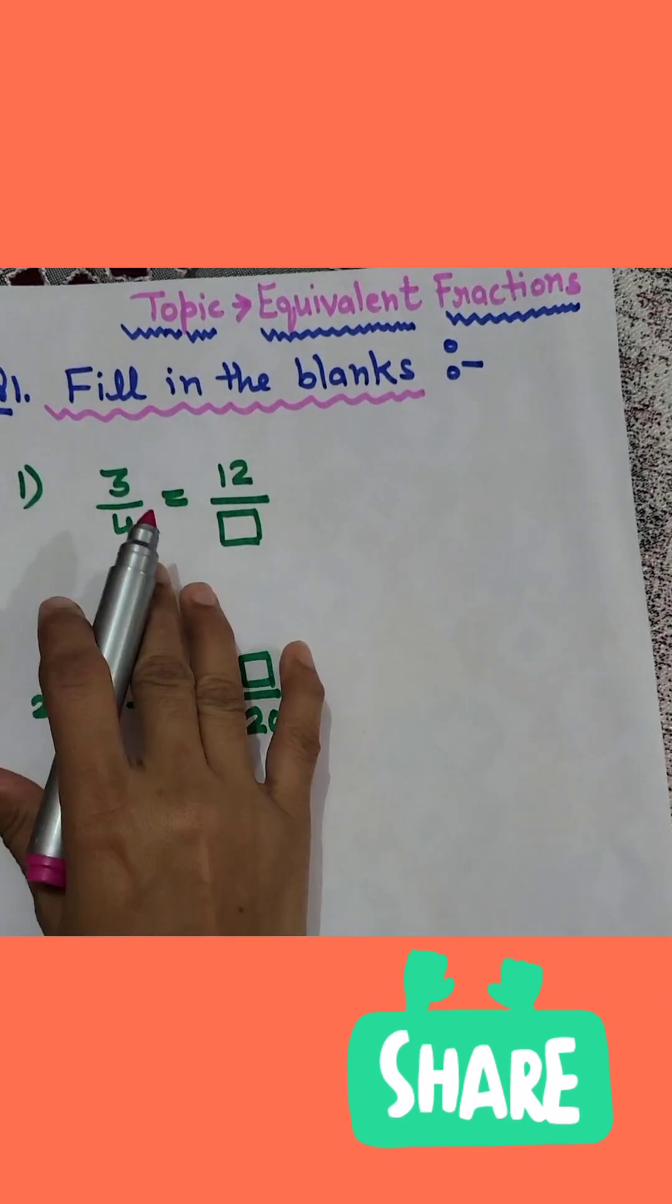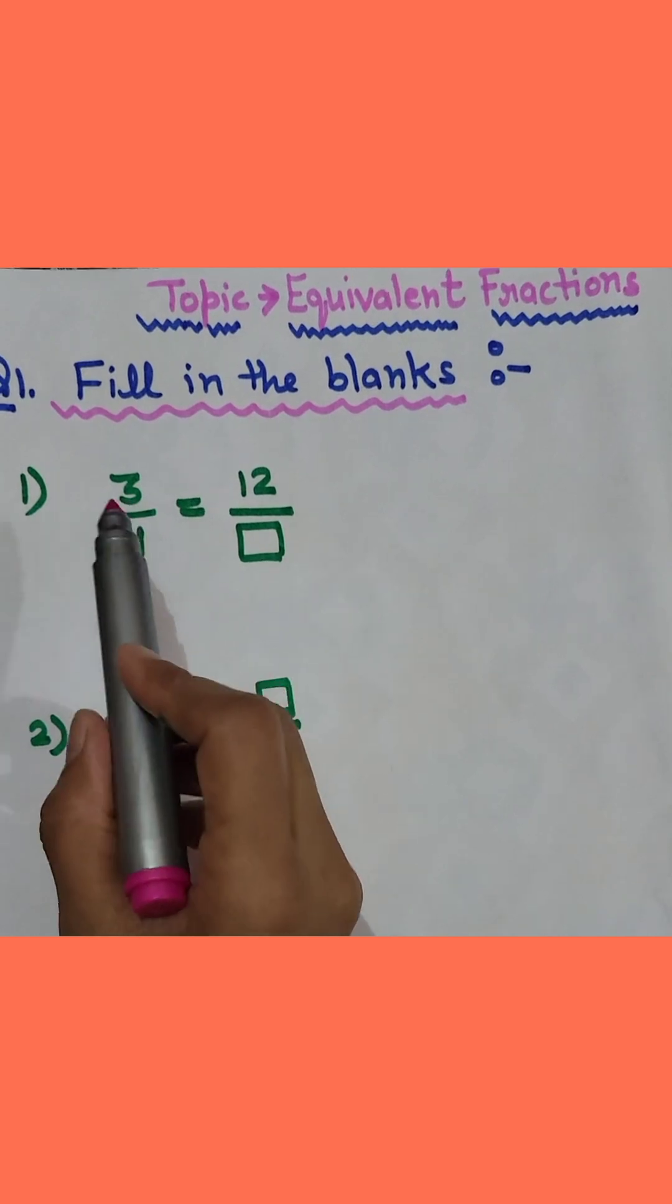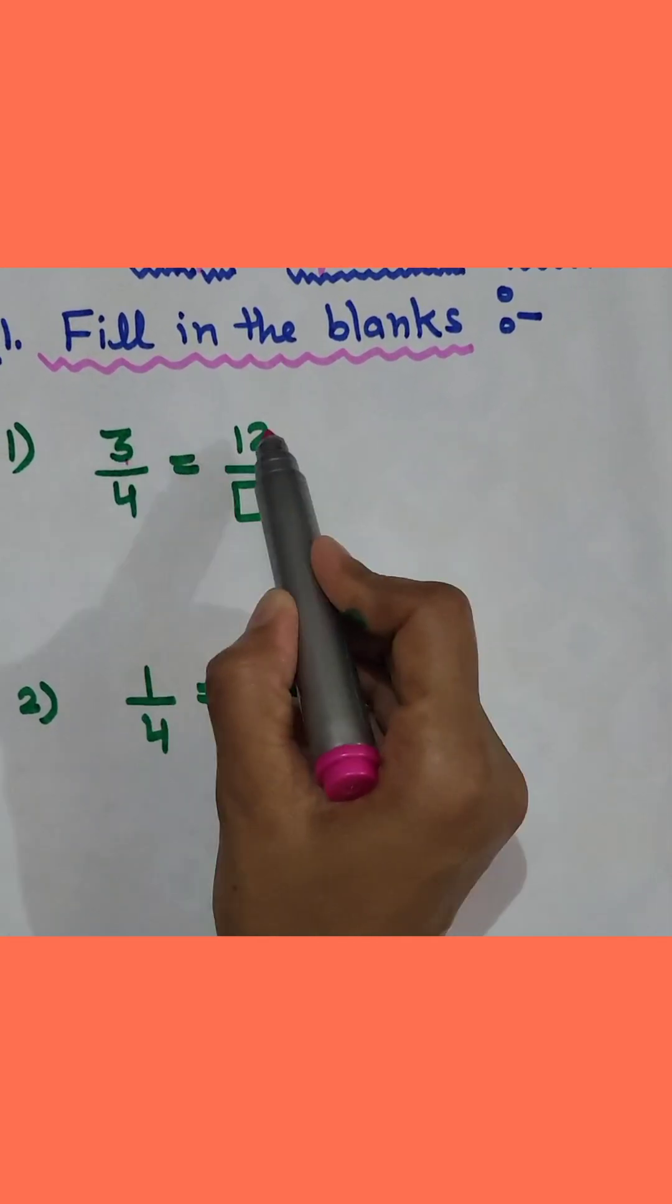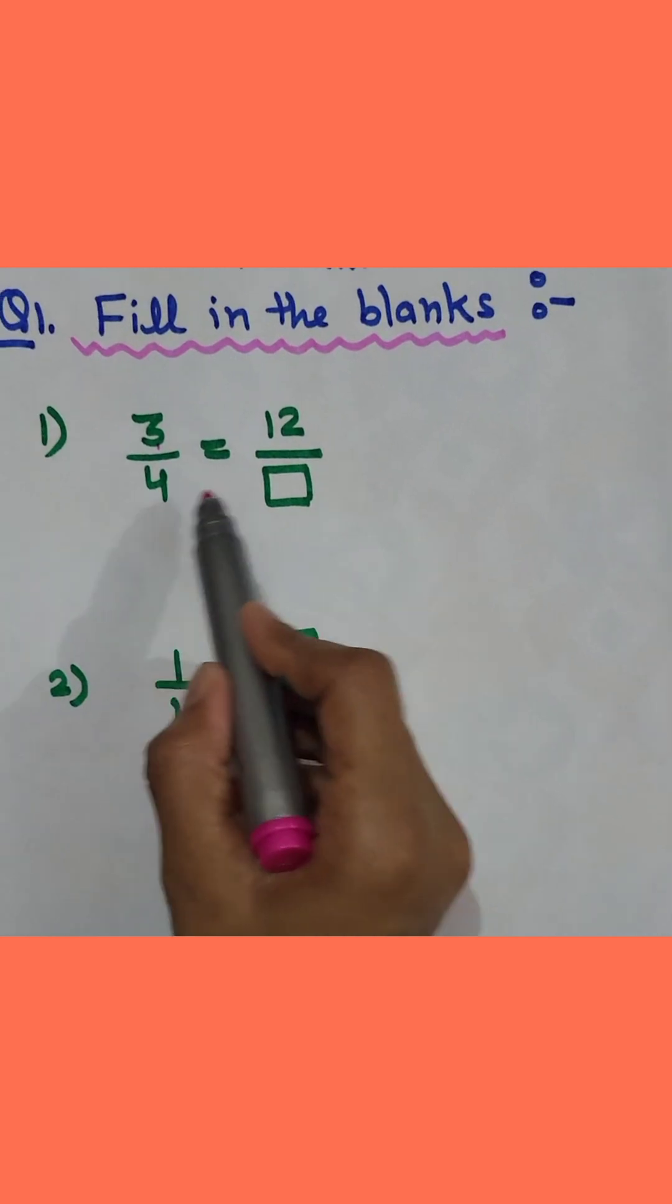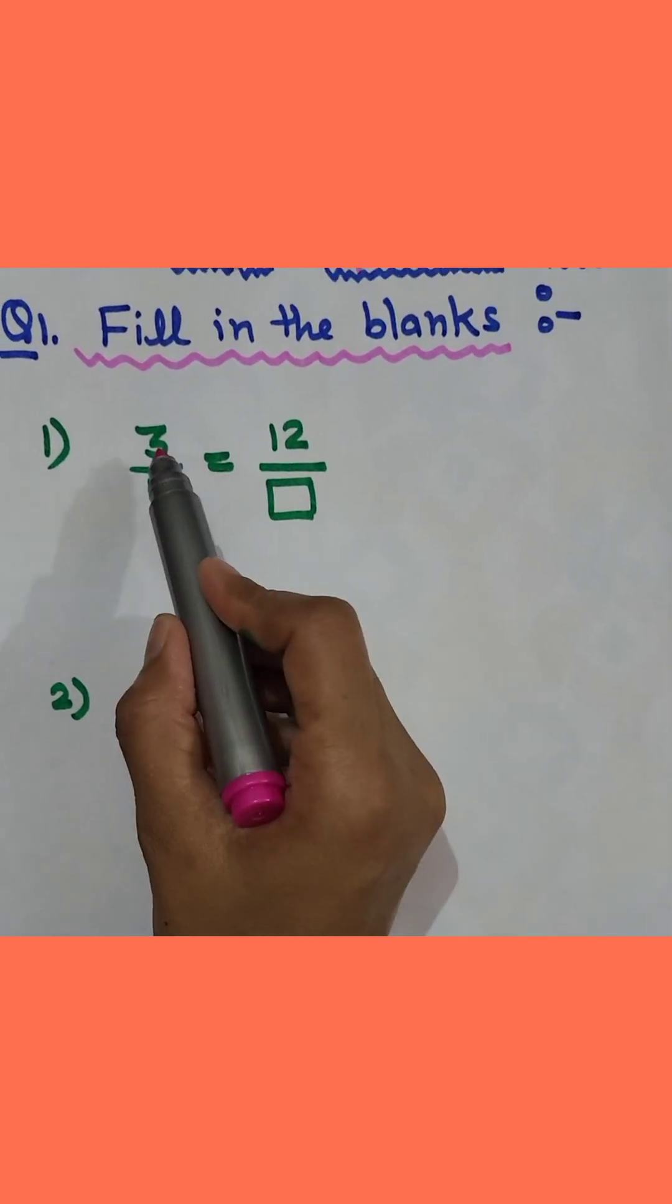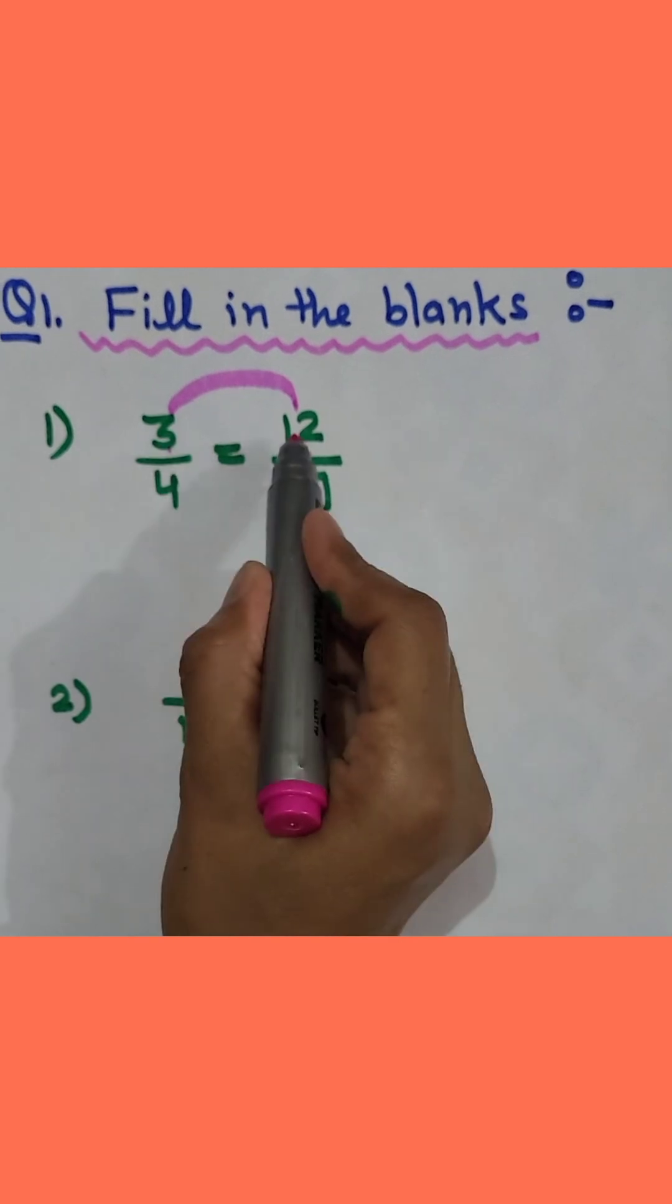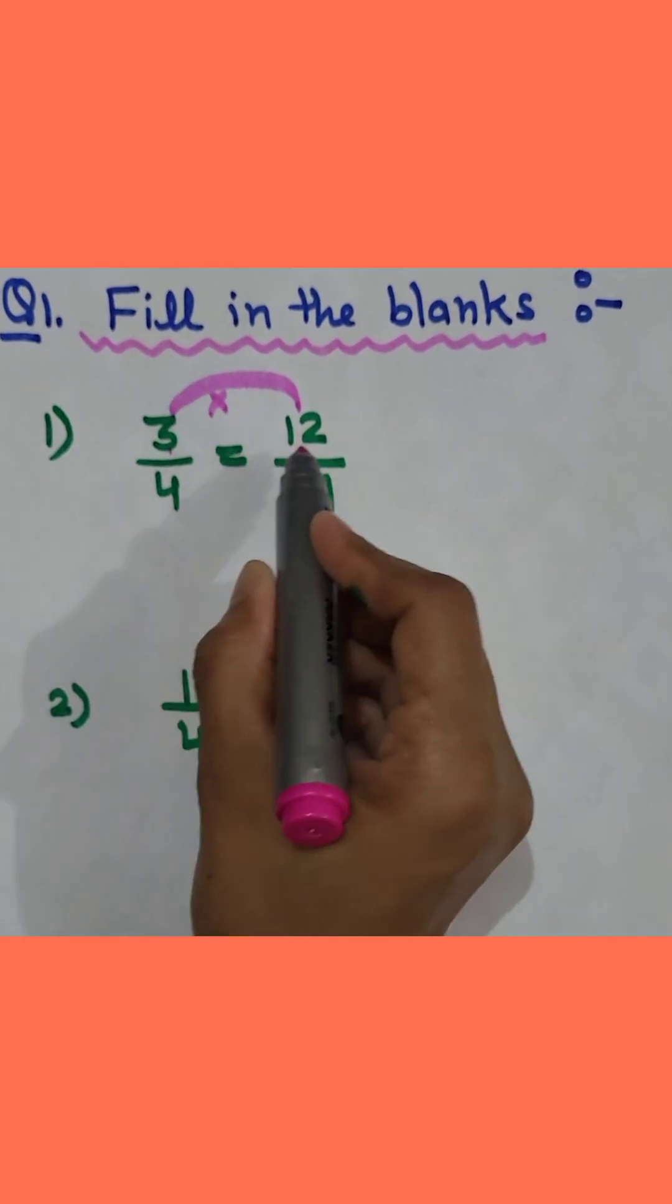Now in these type of questions what you will see, first you will check which two things are given to you. Now numerator is given here and numerator is given here and you don't know the denominator. So what you have to check, you have to check by which number you will multiply 3 so that you will get 12.